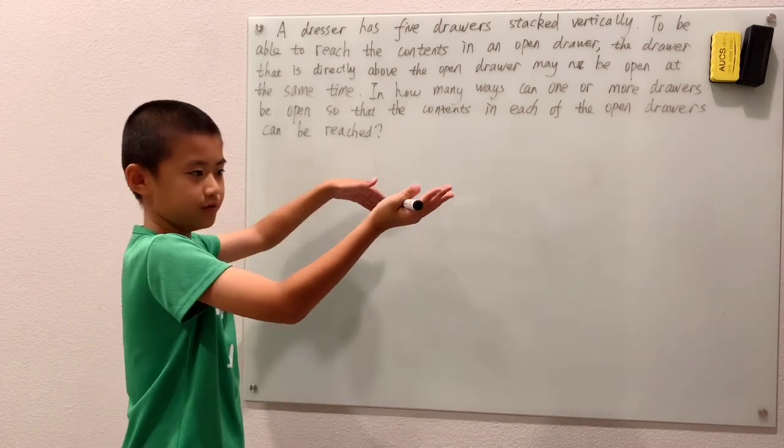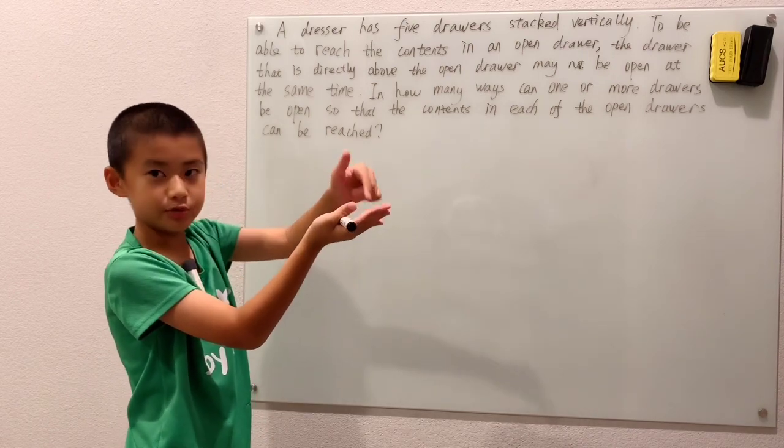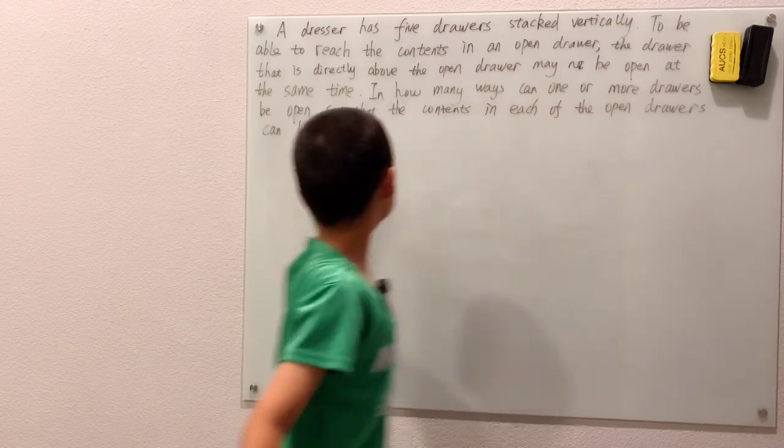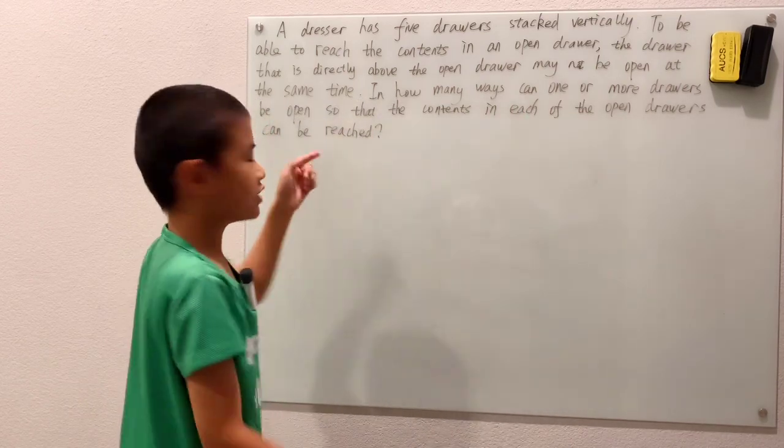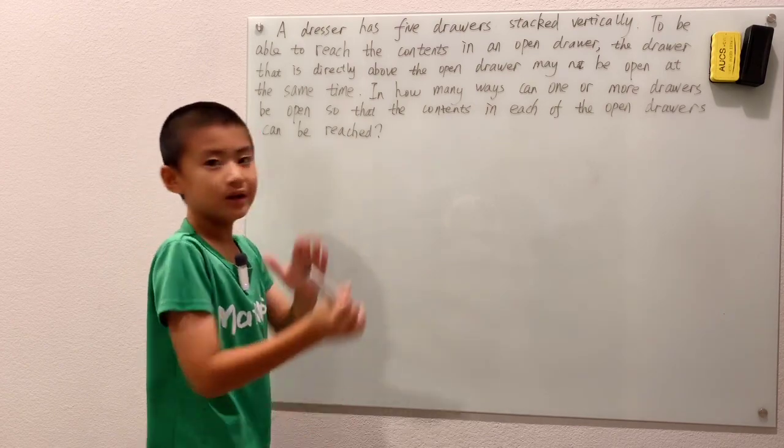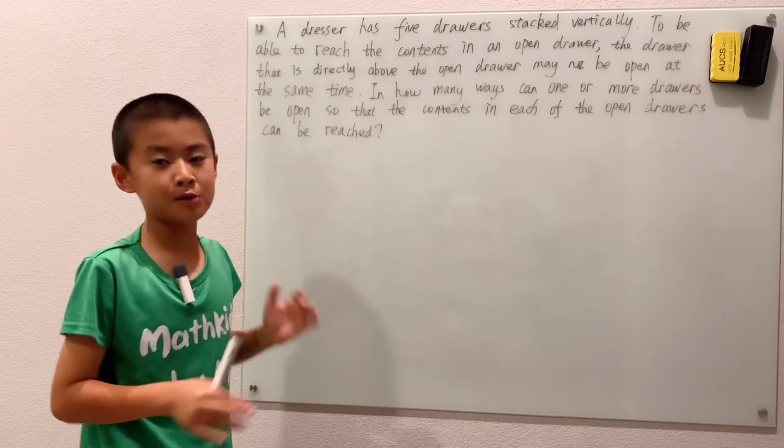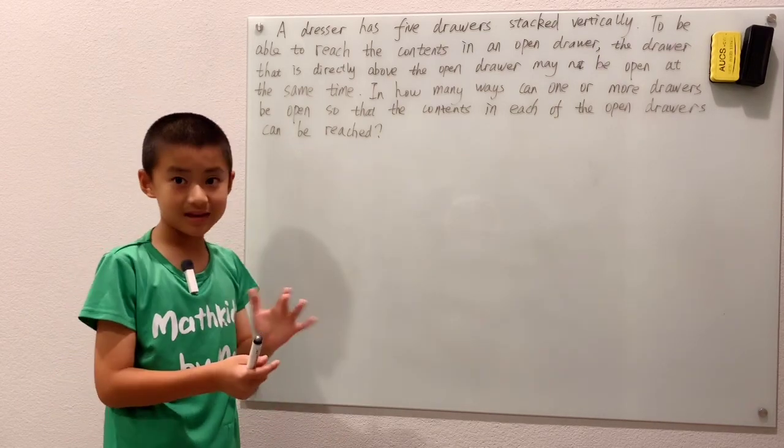So if you have a drawer here and the drawer directly above it is open, well then that can't be a possibility because this open drawer, they say all open drawers, the contents in all open drawers have to be reached, but this open drawer here, the contents in it, you can't reach it. So if you have two drawers on top of each other and they're both open, you can't have that.